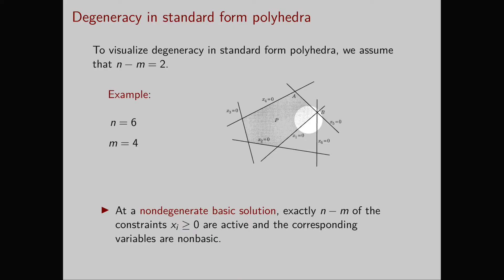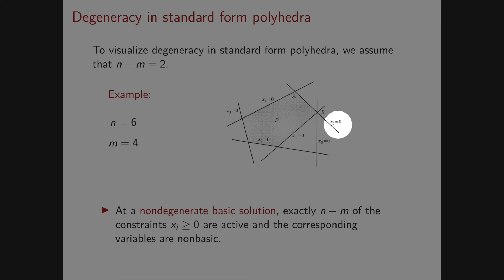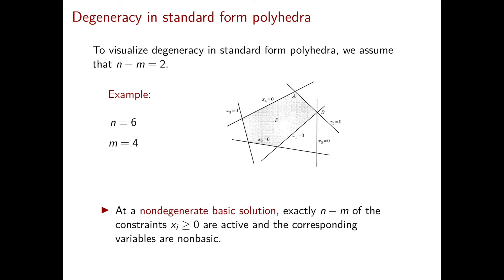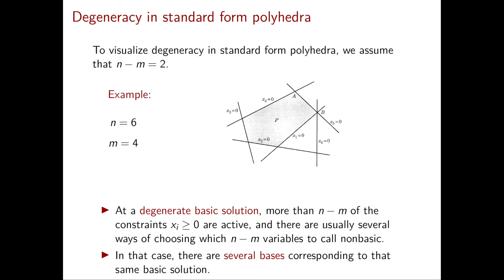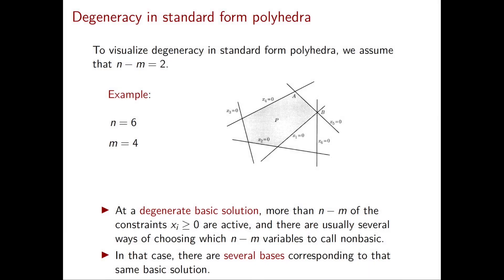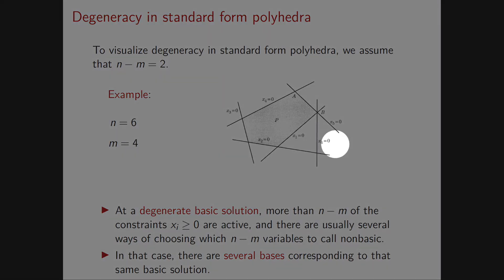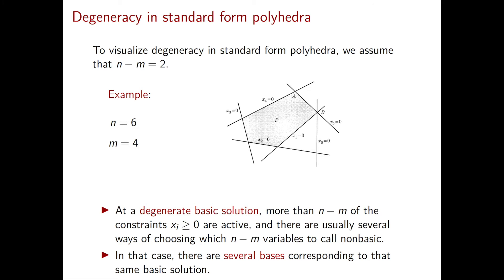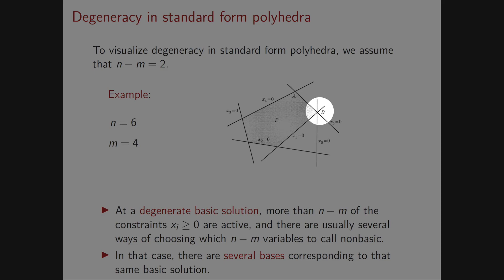In the next example, we have six variables and four equality constraints, giving six lines representing xi ≥ 0 for i from 1 to 6. In a non-degenerate basic solution, exactly two constraints are active. Vector a is non-degenerate while vector b is degenerate because three lines pass through b. If you choose x1 and x5 to be non-basic, the intersection of their two lines also satisfies x6 = 0, giving a degenerate solution. There are several choices of non-basic variables — such as (x5, x6) or (x1, x6) — that all correspond to the same degenerate basic solution b.